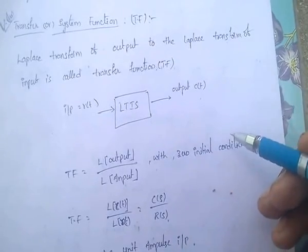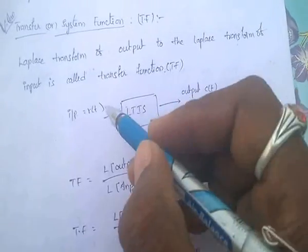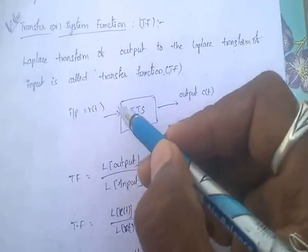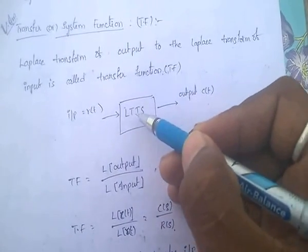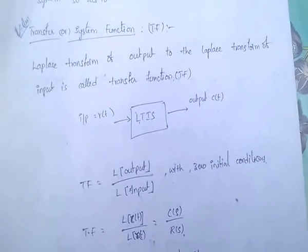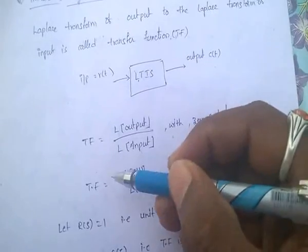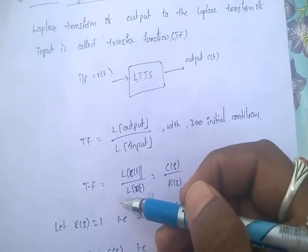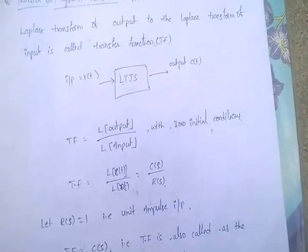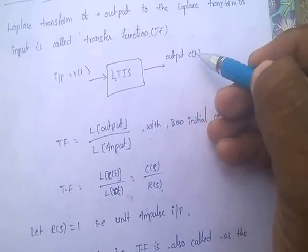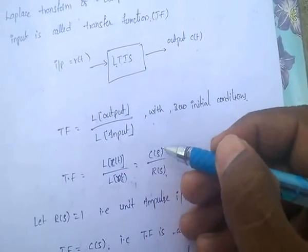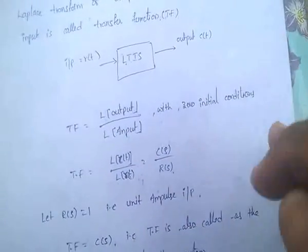LTI means linear time invariant system. This is a system with input and output. Coming to the transfer function: Laplace transform of C(t) divided by Laplace transform of R(t). That is C(s) by R(s).